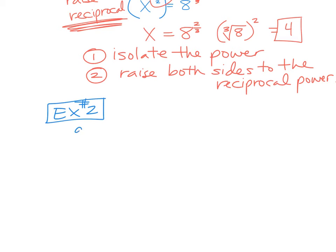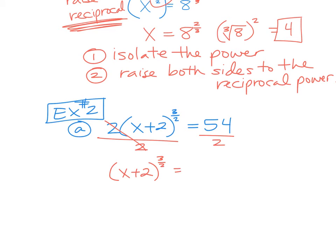Example two. First one looks like this. We have 2 times x plus 2 to the three-halves power equals 54. What do we do first? We have to isolate. So we're going to divide by 2 on both sides because we want just the power. So it's going to be x plus 2 to the three-halves equals 27. Have we isolated at this point? Everything is taken to that power, right? So we have isolated. So now what do we do? We raise it to the power of the reciprocal, right? So we're going to raise this to, instead of three-halves, the two-thirds power is essentially what we're doing.